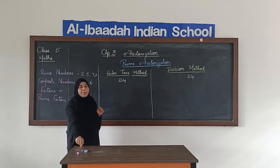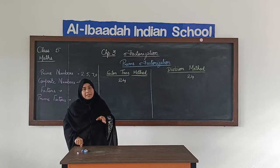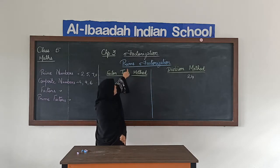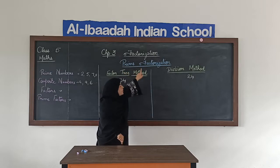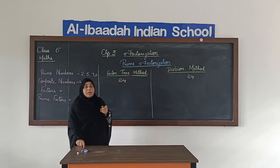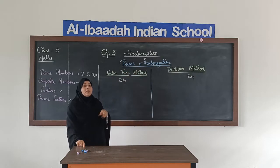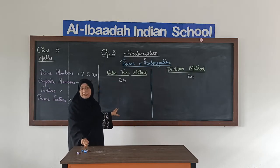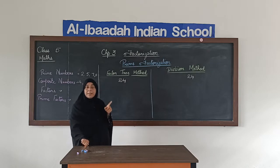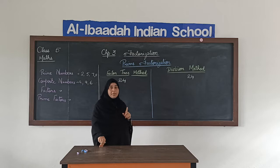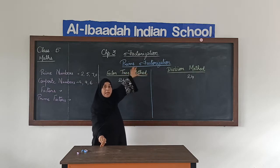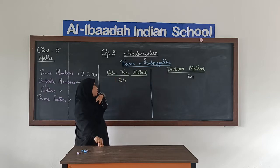Now, factorization means we are going to find the factors of a given number. But what we are going to do is prime factorization — that means we are going to find the factors which are only prime numbers. A number will be given and you will find the factors of that number, but not all factors — only the prime factors. That is called prime factorization.